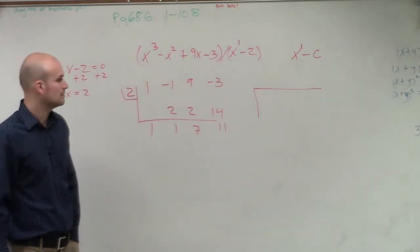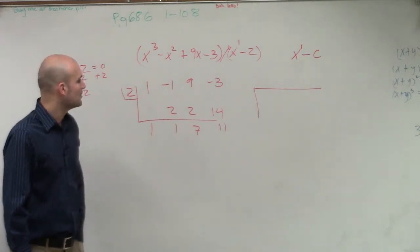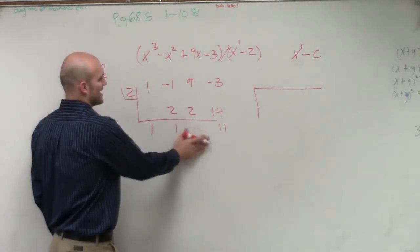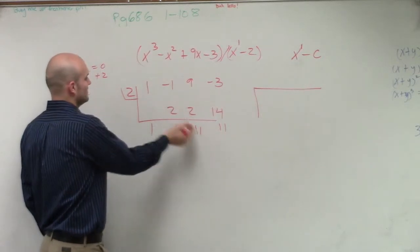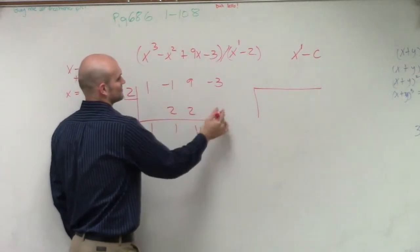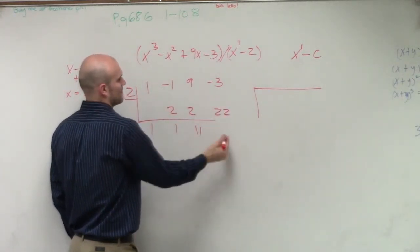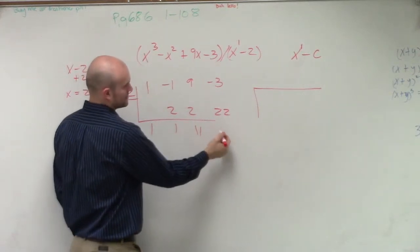Oh, it's, I was adding, you're right, it's 11, right? Thank you. You add. 11 times 2 is 22. So that's going to be 19.